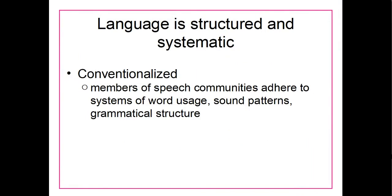Another way that language is structured and systematic is that it's very conventionalized. In certain speech communities — basically certain social groups — we have specific systems of word usage, sound patterns, and grammatical structures. I might use different words or sounds or grammatical rules when talking to one group versus another. If you have a job outside of school, you might talk one way there, another way with your family, and yet another way with your friends. There are a whole bunch of different conventions in language that are actually pretty systematic when we look at them.